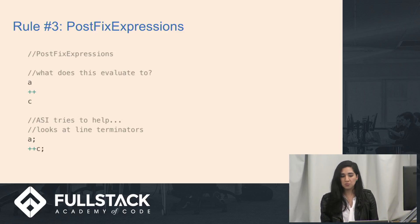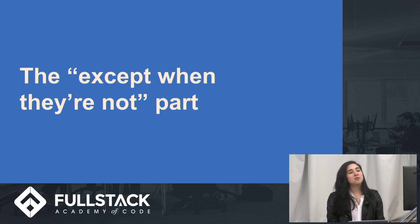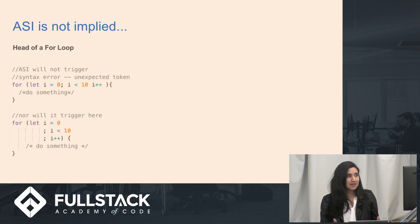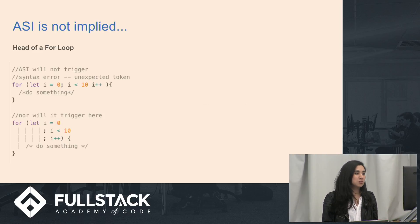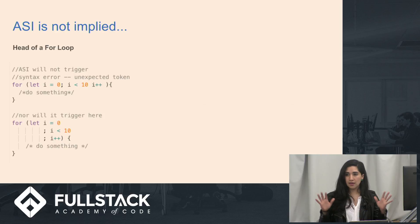There are some exceptions with line terminators to be aware of. There are a couple places where ASI is not implied — for instance, in the head of a for loop. Unlike line terminators as statement separators, for loop semicolons are required and you can't rely on ASI to add them for you. In this example on the bottom left, you have line breaks between the for loop conditions, so you'd think semicolon insertion would come in after 'i = 0' and 'i < 10', but it won't — because you're in the head of a for loop, ASI says it can't help you there.